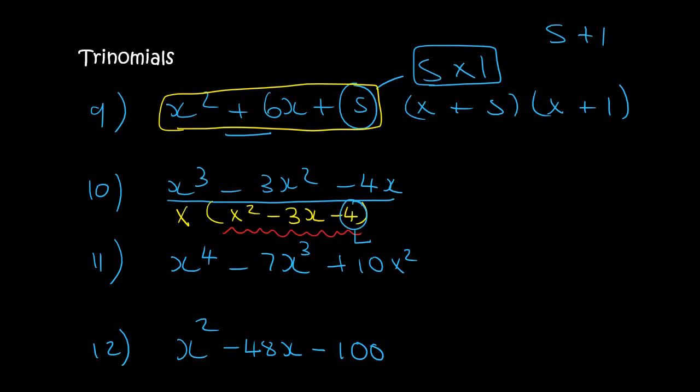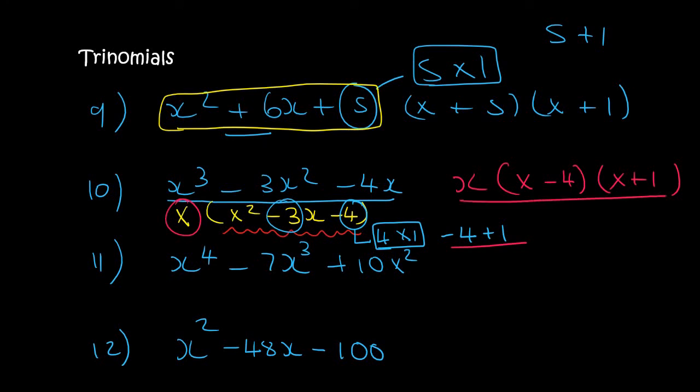You look at the number 4 which is 4 times 1. Now a 4 and a 1 can make minus 3 by saying minus 4 plus 1. So how do we write our answer? The x that you took out must go first. Then you do your two brackets with x and x, and then we say minus 4 and plus 1. This is your final answer.